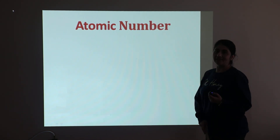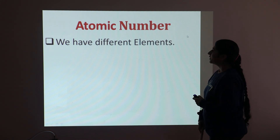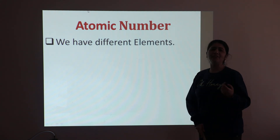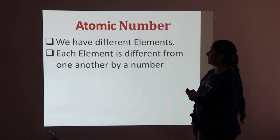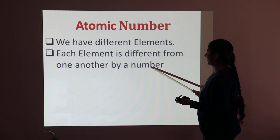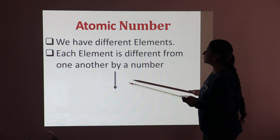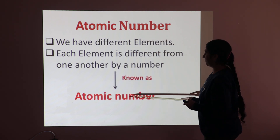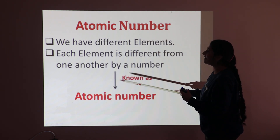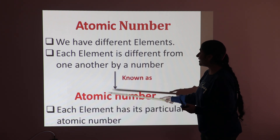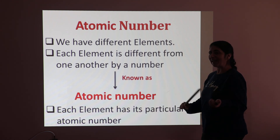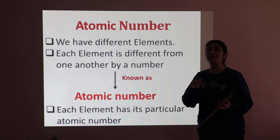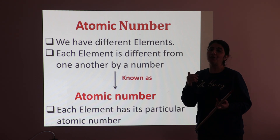So first I will start with the atomic number. As we know, we have different elements — some are natural and some are synthetic. Each element is different from one another by a number, and that number is known as the atomic number. No two elements have the same atomic number; each element has its own atomic number.